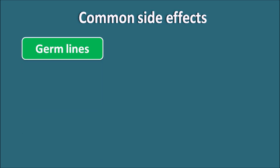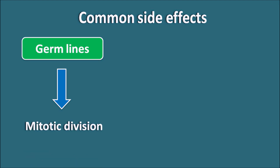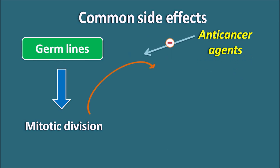The next area is germline cells. Within the germlines, we can observe both meiosis and mitosis. Mitotic division is again a good drug target for many anti-cancer agents. Anti-cancer agents can inhibit this mitotic division, thereby producing sterility in both males and females.